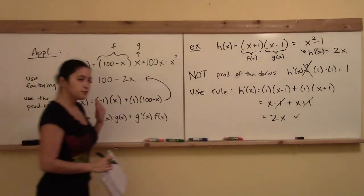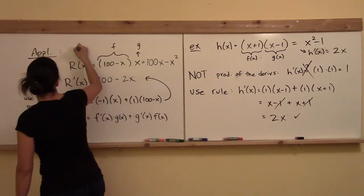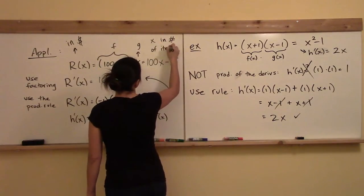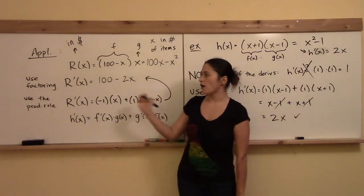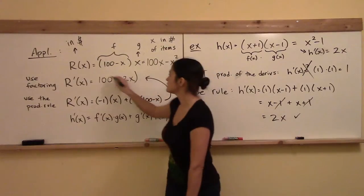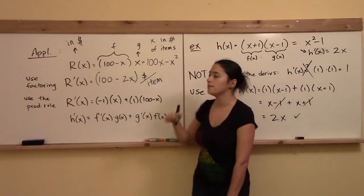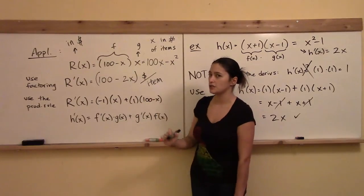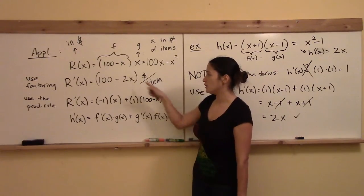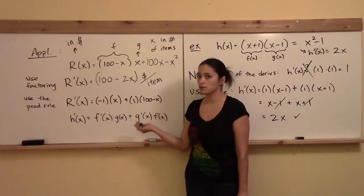Can you keep in mind what r prime means? If r of x is in dollars and x is in number of items, then the units on r prime of x would be dollars per item. So if I increase my item count by 1, this is how much my total revenue is expected to change. In business, what happens to your total function when you increase your input variable by 1 is called a marginal quantity — so this is an approximation for the marginal revenue.